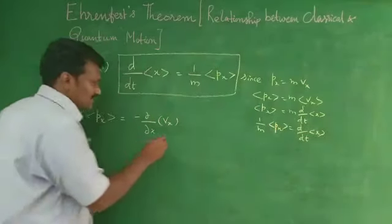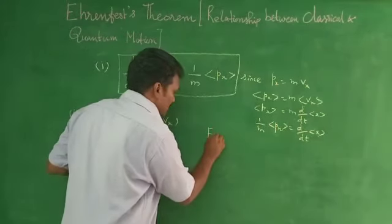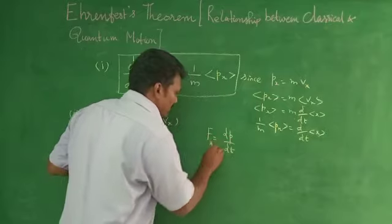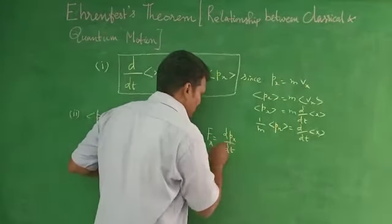Since you know that f is equal to dp by dt, so fx is equal to dpx by dt.